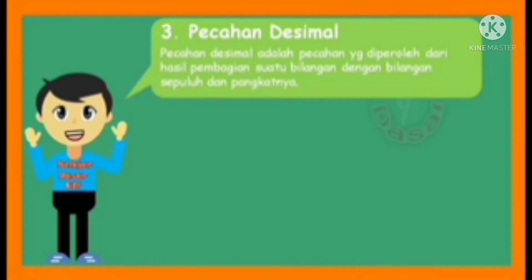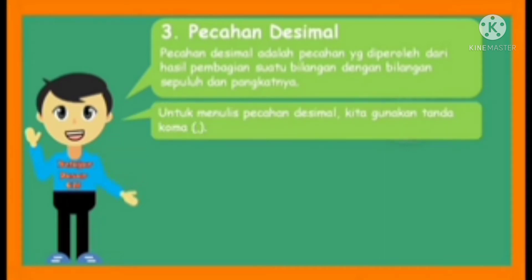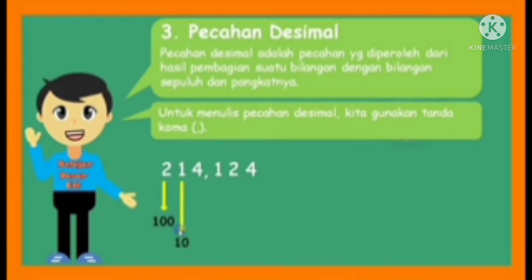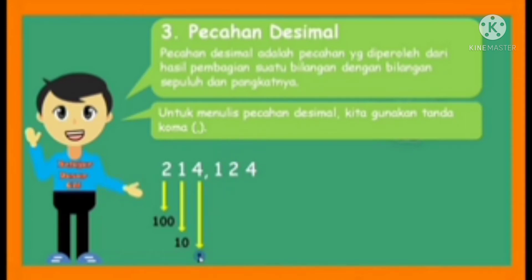Kemudian yang ketiga ada pecahan desimal. Pecahan desimal adalah pecahan yang diperoleh dari hasil pembagian suatu bilangan dengan bilangan 10 dan pangkatnya. Untuk menulis pecahan desimal kita selalu menggunakan tanda koma. Misalkan contohnya 214,124. Kita sudah mengetahui posisi bilangan: 2 itu sebagai ratusan, 1 itu sebagai puluhan, dan 4 itu sebagai satuan. Sebelum belajar pecahan, satuan merupakan nilai terkecil.